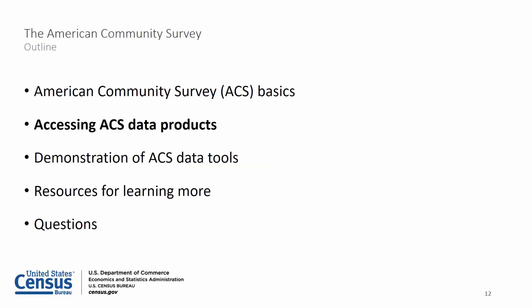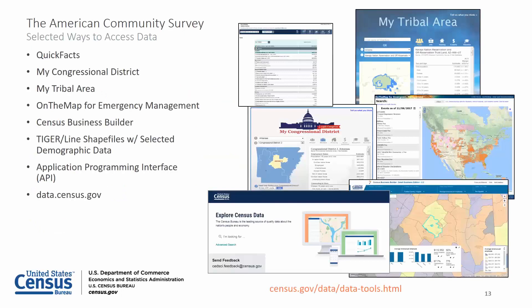Now I want to show you how to access ACS data products. We cater to a variety of data users with unique needs, so we have a variety of data access tools. QuickFacts provides selected statistics for all states and counties and for cities and towns with a population of 5,000 or more, using the ACS as well as other Census Bureau data sets such as the population estimates program, the 2010 census, county business patterns, survey of business owners, and building permit survey.